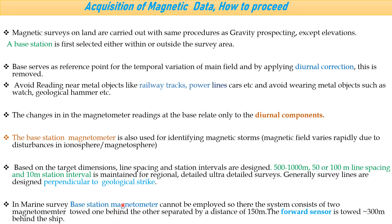In marine surveys, we cannot fix a base station magnetometer because the survey is far from land and a base station cannot be established at sea. The system therefore consists of two magnetometers — one towed behind the other — with a separation of 150 meters. The forward sensor is towed 300 meters behind. Generally, the magnetometer is towed behind at roughly three times the length of the ship, depending on target dimension and sea conditions.